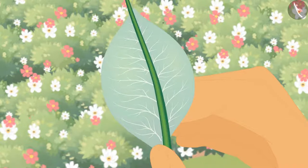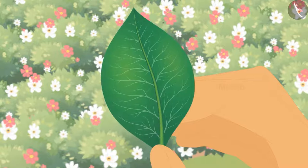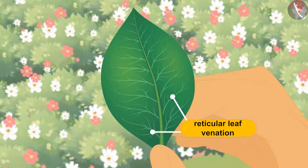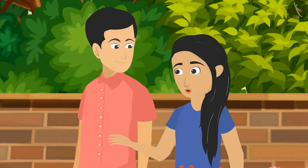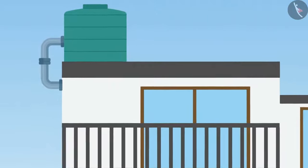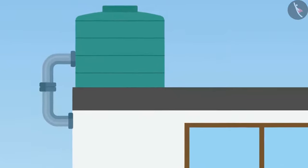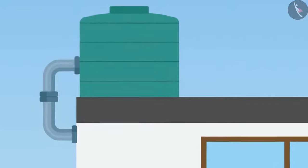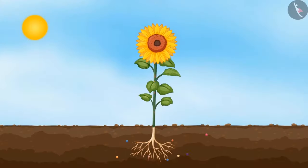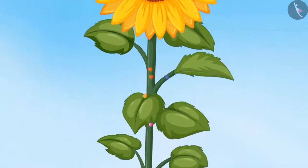This hard line in the middle of the leaf is called the midrib, and the other lines surrounding the midrib are called veins of the leaf. The design made by veins in a leaf is called reticular leaf venation. The structure of the water distribution system in our houses is also the same — the main pipe from the water tank is the widest and distributes water through thinner pipes to the washroom, kitchen, and basin. Just like this, plants also distribute water and food to and from leaves.